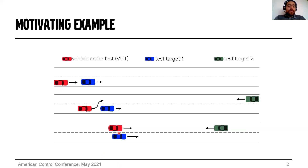We assume that the motion of the VUT is controlled externally and is not controlled by the agent controlling targets one and two. We also assume that the future motion of the VUT is unknown to the controller coordinating the two test targets. So it would be difficult to control the test targets using fixed reference trajectories because of the unknown motion of the VUT. We need a modeling framework capable of describing a wide variety of test scenarios, and for that we chose hybrid systems, focusing in particular on switching systems.